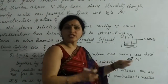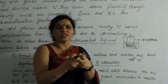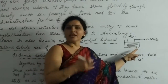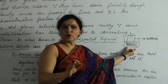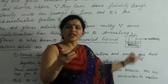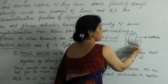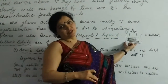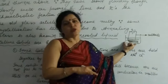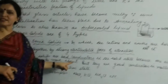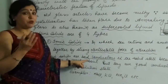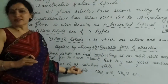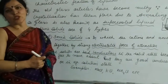Na⁺ and Cl⁻ are so tightly bound together that they don't move freely. So ionic solids are bad conductors in the solid state because no ion is free to move. But if you melt it or dissolve it in a little water, the ions become free and it becomes a good conductor. Ionic solids are good conductors in the molten state or in the aqueous solution state.